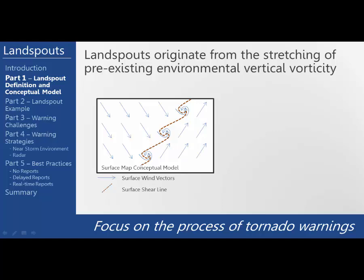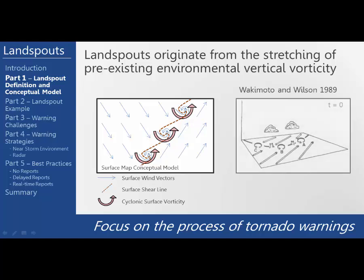We can extrapolate this point along the entire boundary and connect them with a brown dashed line that indicates where we have both surface convergence and horizontal shear instabilities. Over time this laminar shear breaks down into tiny areas of enhanced cyclonic vorticity. The pink curved arrows highlight three areas of cyclonic surface vorticity in this conceptual model. This idea falls in line with the research from Wakamoto and Wilson.